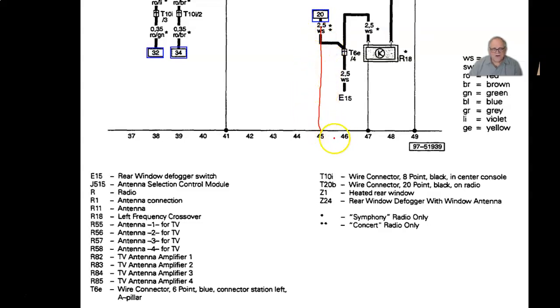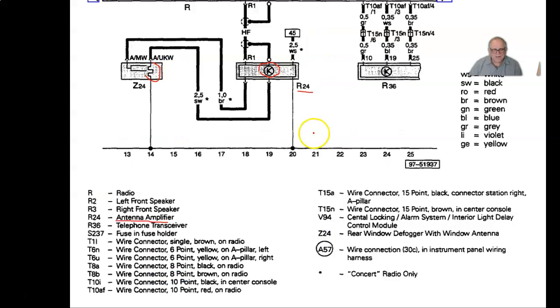What that means is I need to go to the grid 20 over here, follow this up. There's the 45. That's where this wire continues at.